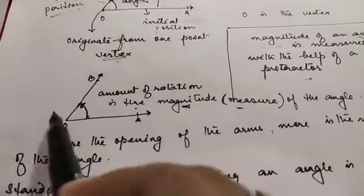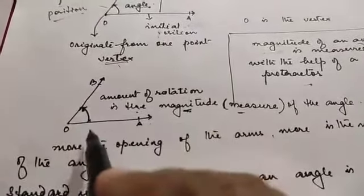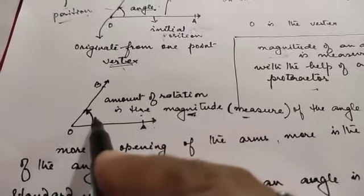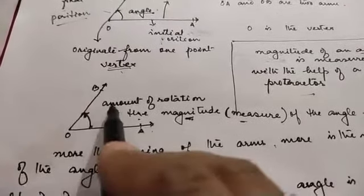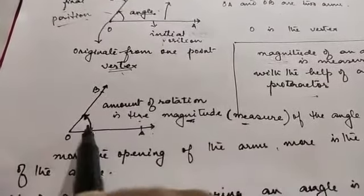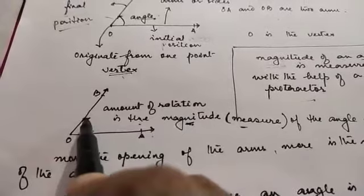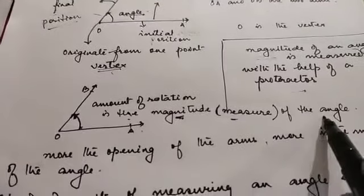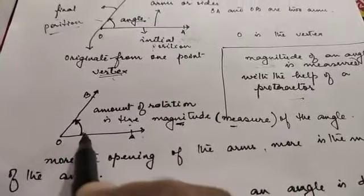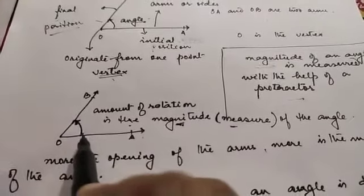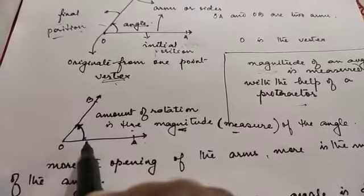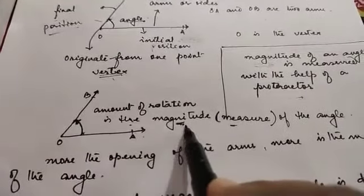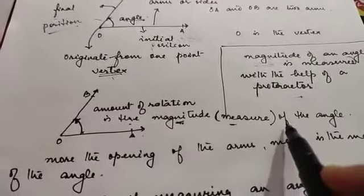OA and OB are the two rays. There is a measure that is formed between these two rays — this is the angle. The amount of rotation, from the initial position to the final position, is the magnitude or the measure of the angle.